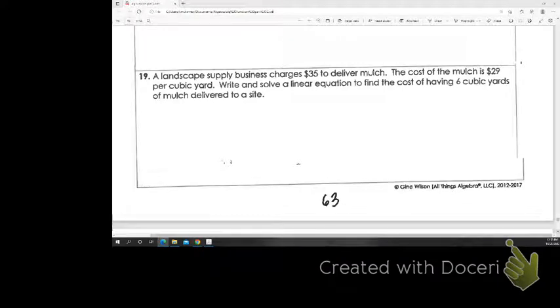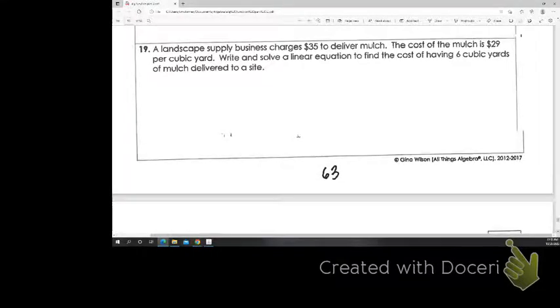Number 19 is a little more similar to what you're going to see, minus the part about the 6 yards. If you were charging $35 to deliver the mulch, and the mulch is $29 per cubic yard, what kind of equation could we write in slope-intercept form? Which one would go with the X? The 29, because that's for every yard. The $35 is only being charged once. And then in this case, I could replace the X with a 6, and that would give me my answer.